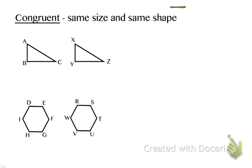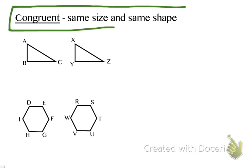The first thing for your notes is a definition for the word congruent. Congruent means that two or more figures are the same size and the same shape. Please make a sketch of the two congruent triangles you see directly below this definition.